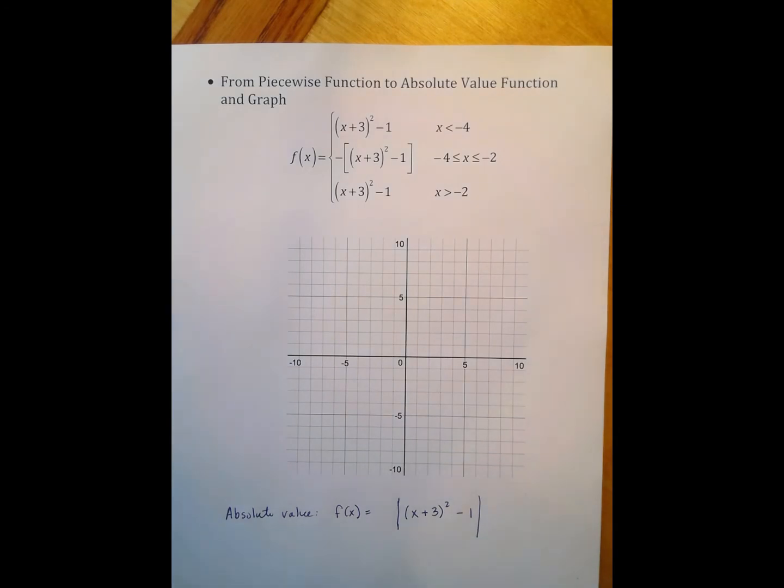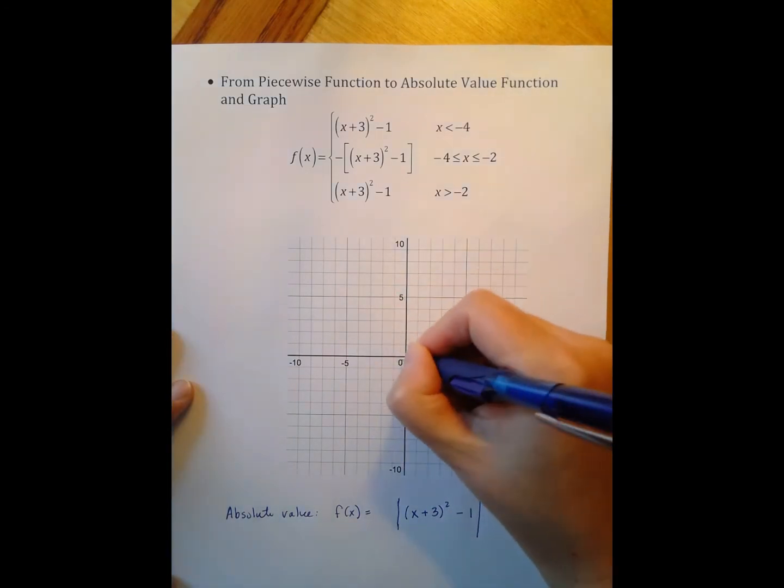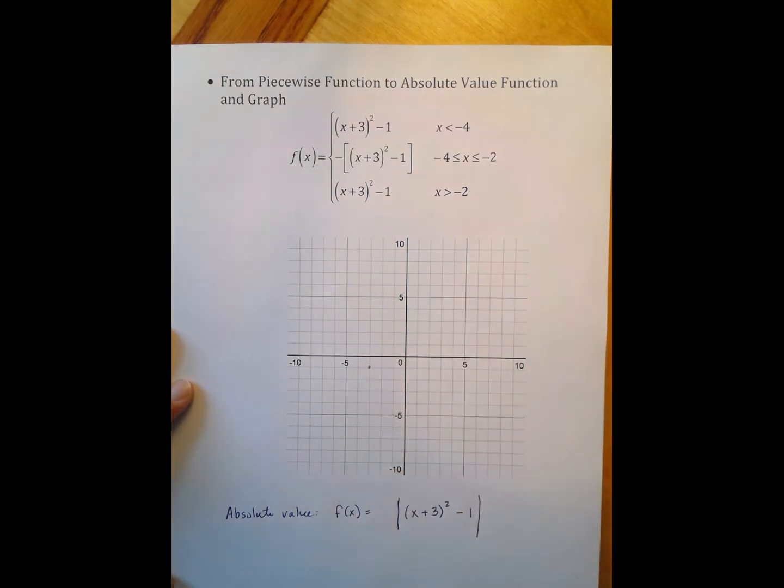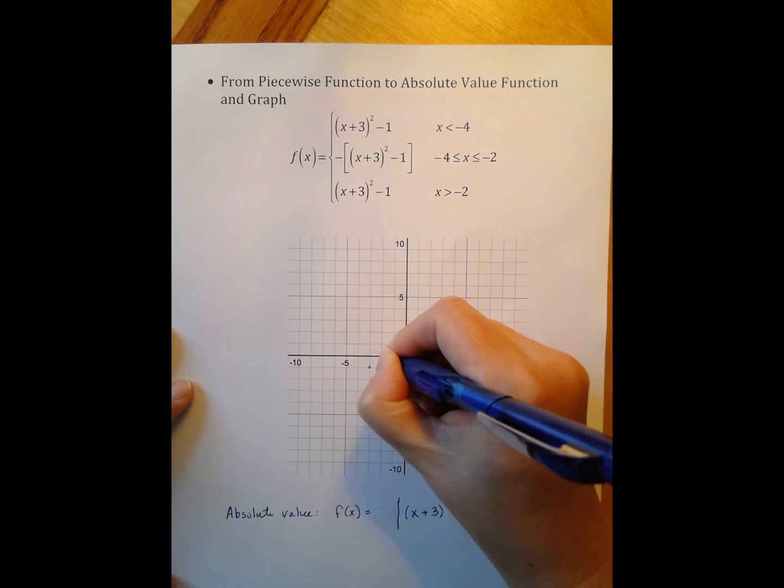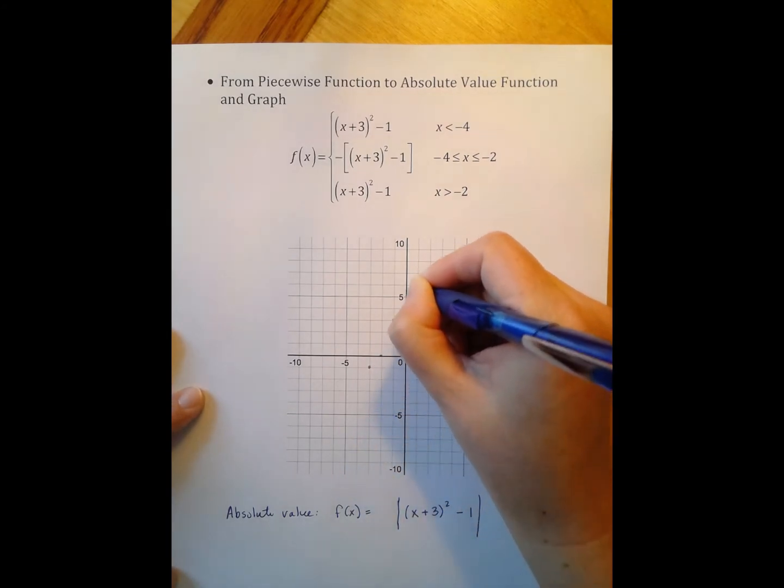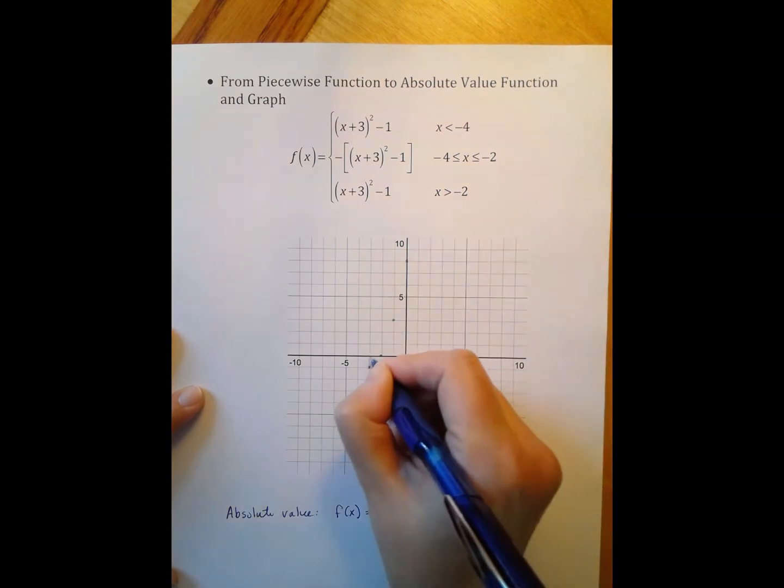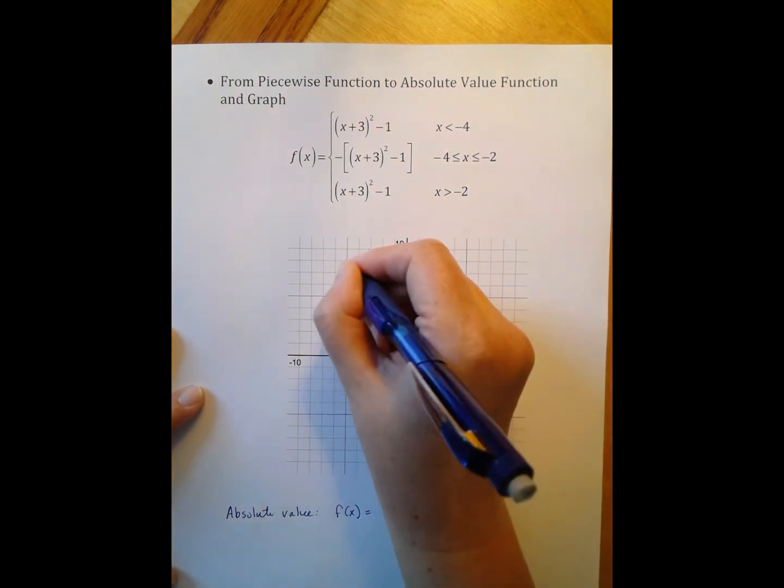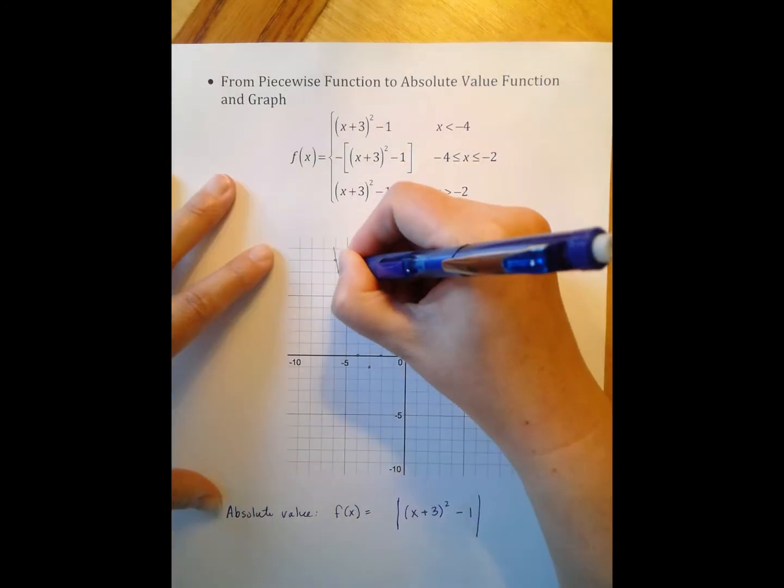Now I graph this parabola. I have my vertex at negative 3, negative 1. The a value is 1. So over 1, up 1. Over 1, up 3. Over 1, up 5. Put the mirror image in. Connect the dots.